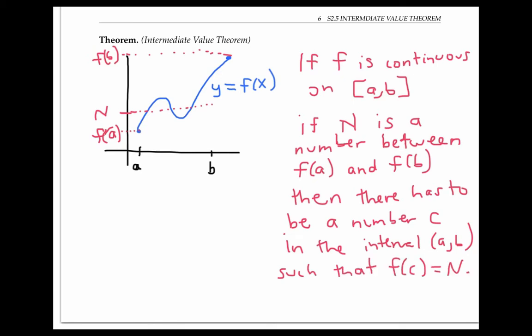In our example, there are three such possible values for c. It could be right here since f of that number equals n, or it could be here, or here. I'll just mark the middle one.